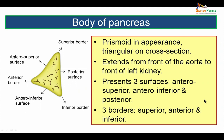The body of pancreas is prismoid in appearance and triangular on cross-section. It extends from the front of the abdominal aorta to the front of the left kidney. It presents three surfaces — anterosuperior, anteroinferior, and posterior — and three borders: superior, anterior, and inferior. The superior border, the inferior border, the anterior border, and the three surfaces are clearly visible on cross-section, with the flat posterior surface resting on the posterior abdominal wall.